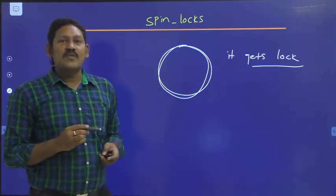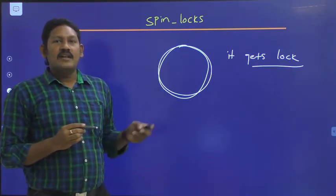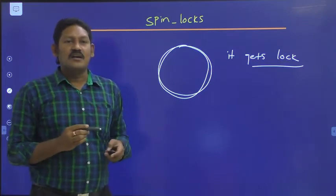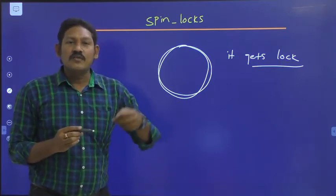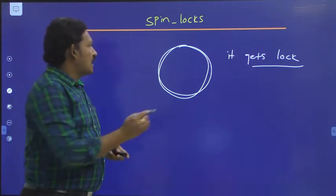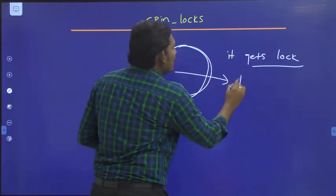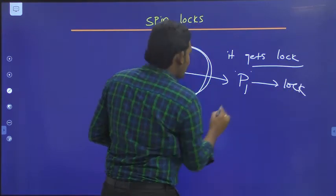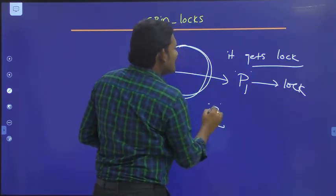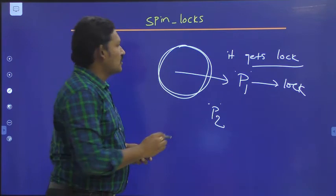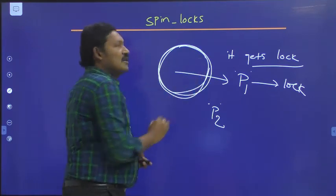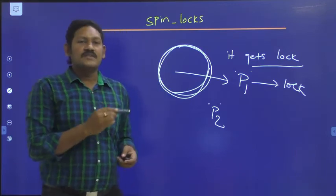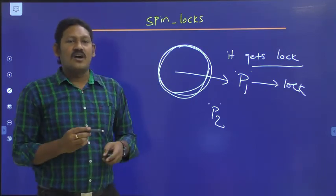For example, if process P1 has acquired a lock and process P2 is trying to acquire the lock, then process P2 will keep spinning or rotating, keeping itself busy until it acquires the lock.